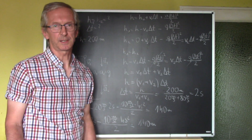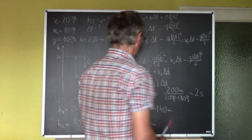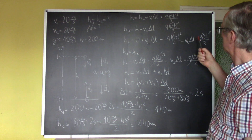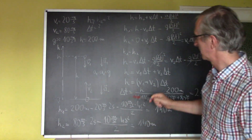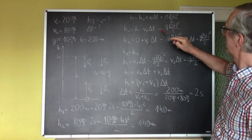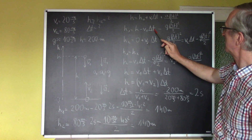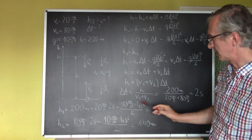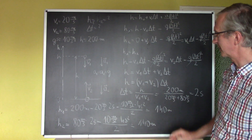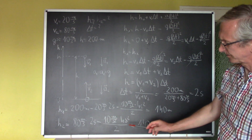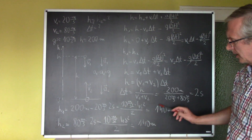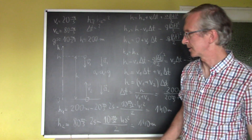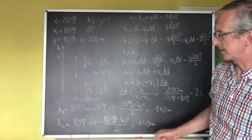If we want to know where these balls will meet, we substitute t = 2 seconds into either equation of motion. We achieve the same value from both equations. After two seconds these balls met, so they were in the same place, and the coordinate of position of both bodies was the same.